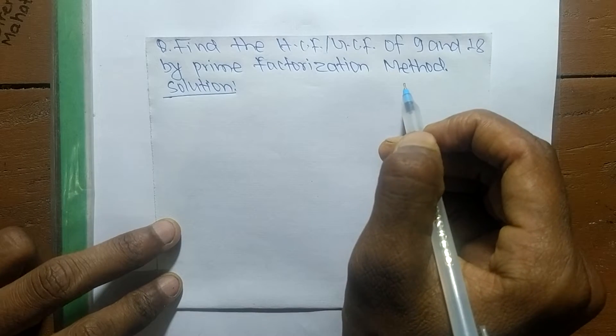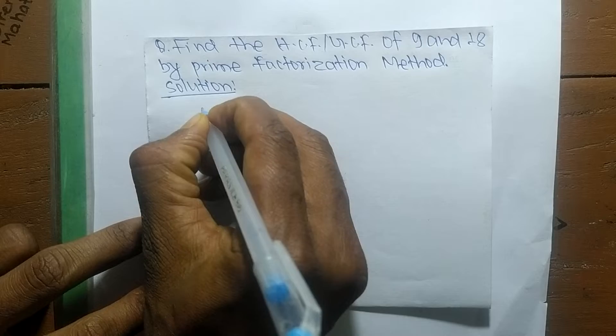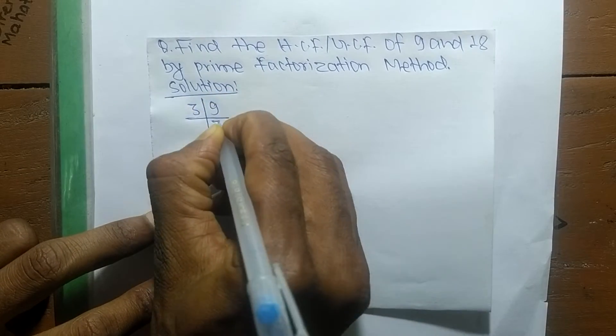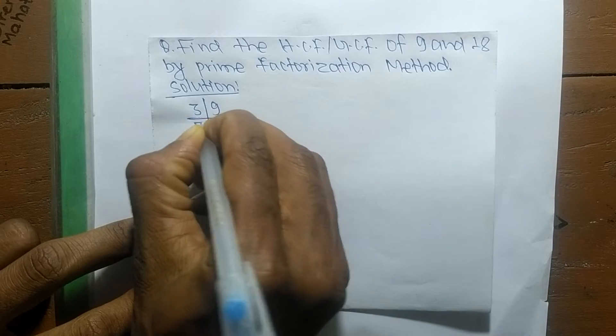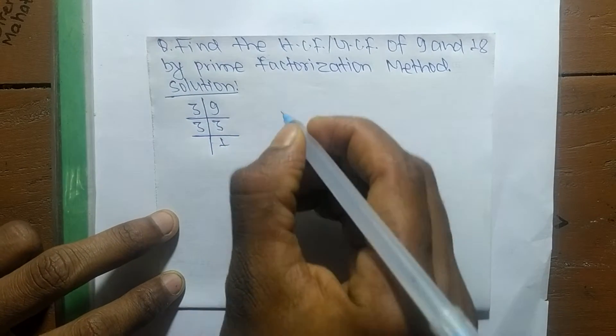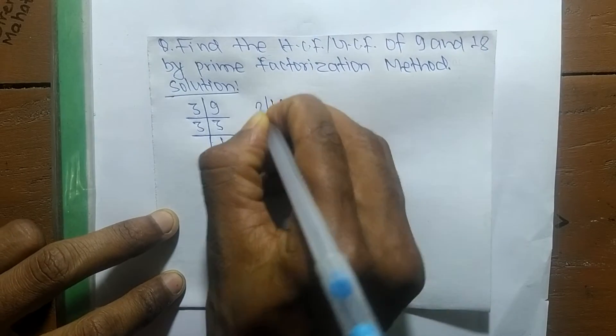First, we find out the prime factors of 9, so it is 3 times 3 equals 9. Like 3 times 1 equals 3. In the same way, the prime factors of 18 is 2 times 9 equals 18.